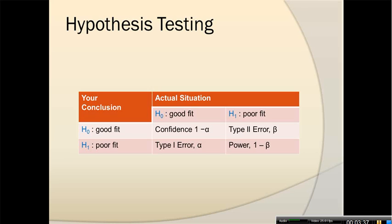It could also happen that the actual situation is that the distribution is not a good fit — it's a poor fit. We can still make a correct conclusion: that yes, it's a poor fit. In that case, we talk about the power of the test, which means we are able to reach the correct conclusion in a situation where the alternative is true. When the alternative is true, we need to reject the distribution as an assumption. If we're able to actually reject it, that talks about the power of the test, which is 1 minus beta, where beta is a type 2 error.